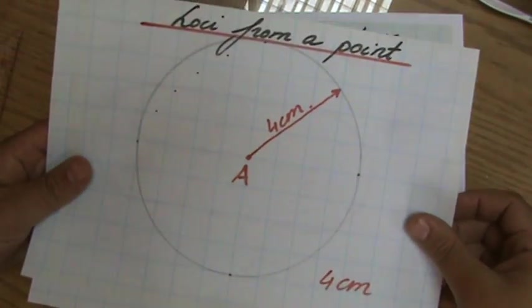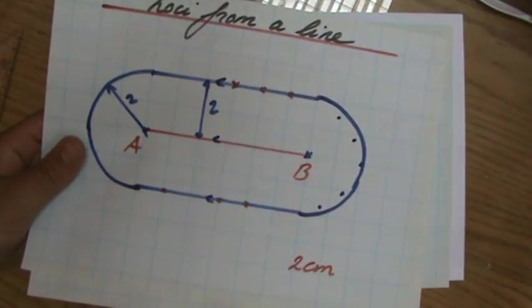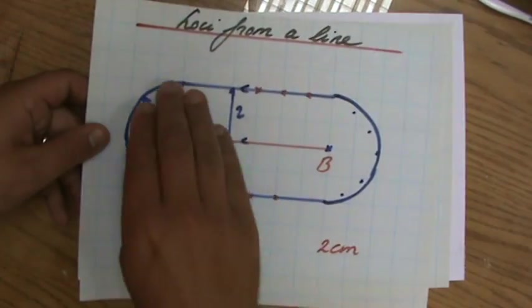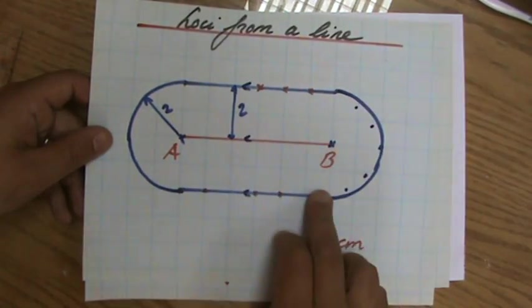So, before I do, very quickly, loci from a point, you do the circle with a radius of a particular amount. Loci from a line, parallel lines.